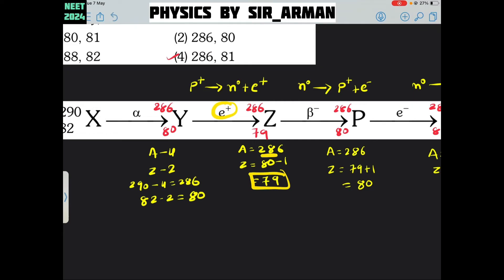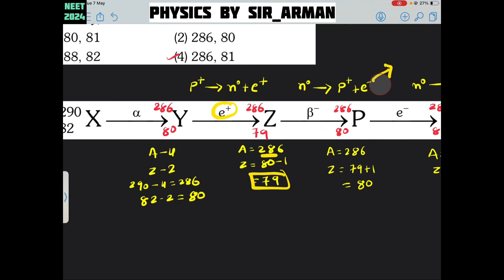In the next process, a neutron is decaying into a proton and an electron — that is beta minus decay. The electron comes out from the nucleus while the proton resides in it. A neutron converts itself into a proton, so the number of protons increases and the number of neutrons decreases, but the mass number remains the same. So the atomic number increases by 1: 79 plus 1 becomes 80.